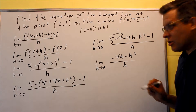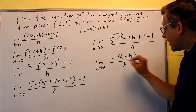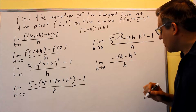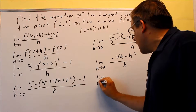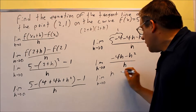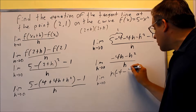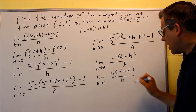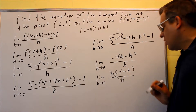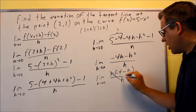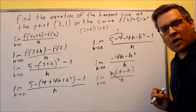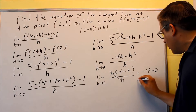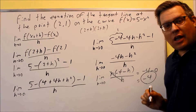We need to take the limit, but if we put 0 in right now we're dividing by 0. So we factor out an h from the numerator to cancel it with the denominator, avoiding division by 0. Taking the limit as h goes to 0, after factoring we get (negative 4 minus h) over h. The h's cancel, and substituting 0 gives us negative 4 as the slope.